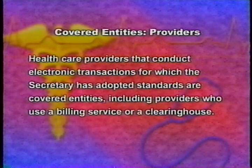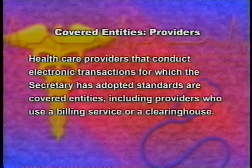Let's review each of the three covered entity categories in more detail. All health care providers that conduct any electronic transactions for which the Secretary of DHHS has adopted standards are covered entities — this includes providers who use a billing service or clearinghouse. This includes hospitals, clinics, nursing homes, physicians, suppliers, and others that furnish, bill, or receive payments for health care services. If you use another entity such as a clearinghouse to conduct covered transactions electronically on your behalf, you are considered to be conducting the transaction in electronic form and thus are a covered entity.